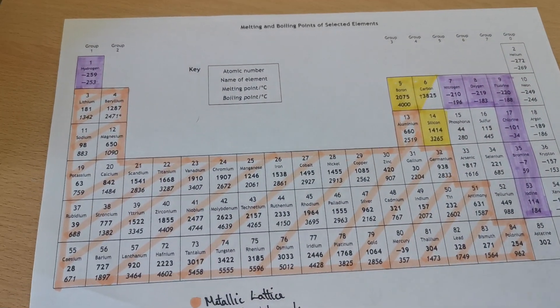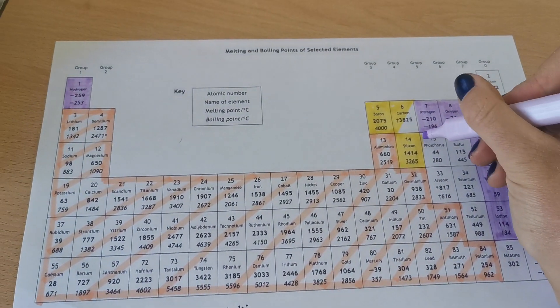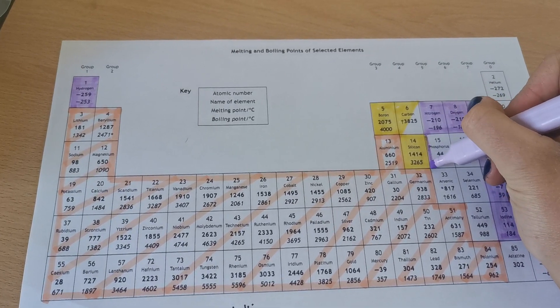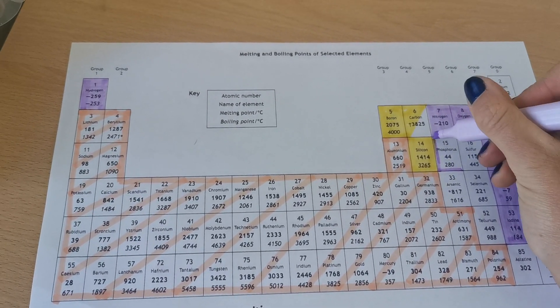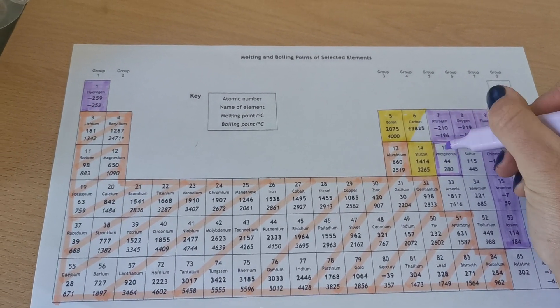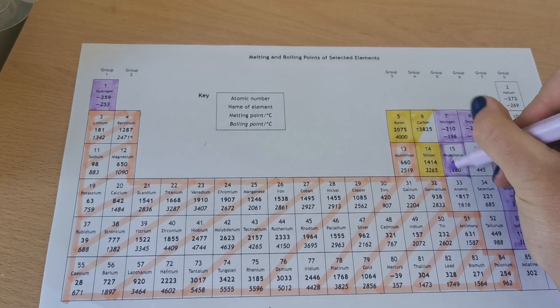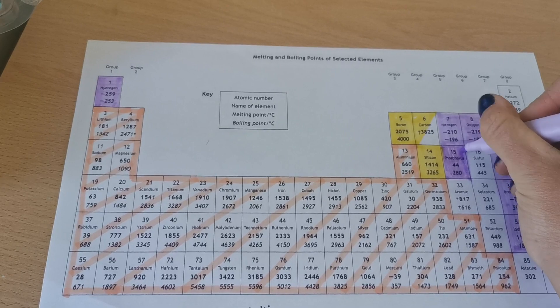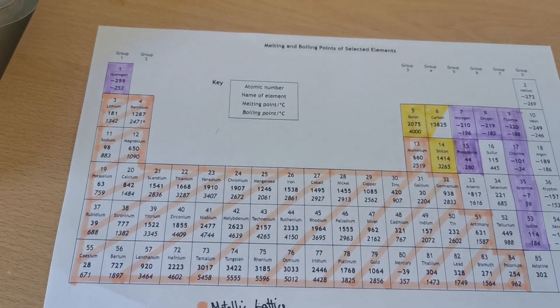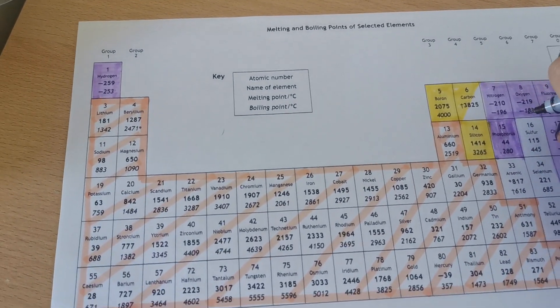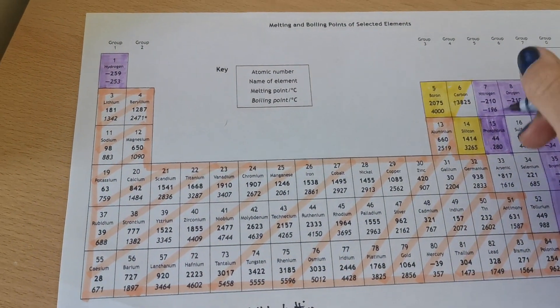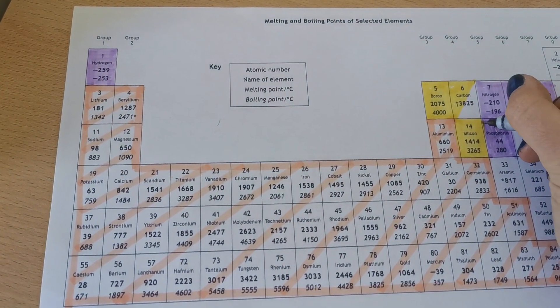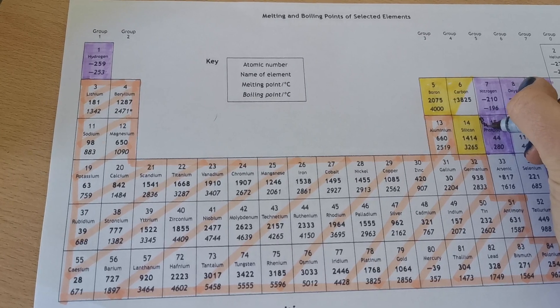The first one is phosphorus. Phosphorus exists as P4. That means there's four phosphorus atoms joined together in one molecule of phosphorus. Because of that, I'm going to write in the box P4 at the top.